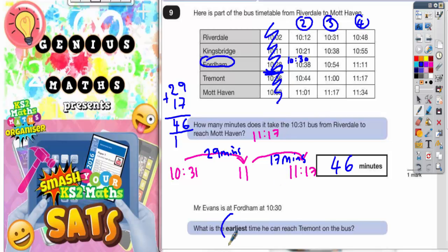But the trick to this question is it says what's the earliest time he can reach Tremont on the bus? So he's not going to get on bus number 3 or 4 because these buses reach Tremont later. He wants to get there earlier. So he's going to get on the earliest bus he can. And the earliest bus he can get on is the bus number 2 at 10:38. So if he gets on at Fordham at 10:38, the 10:38 bus gets into Tremont at 10:44.